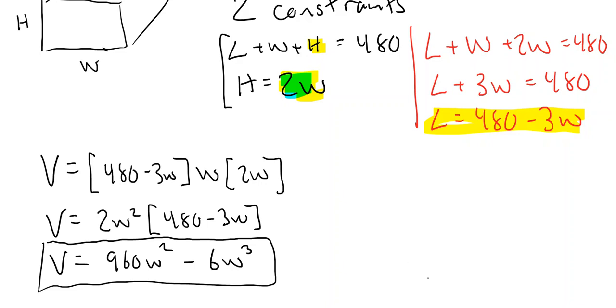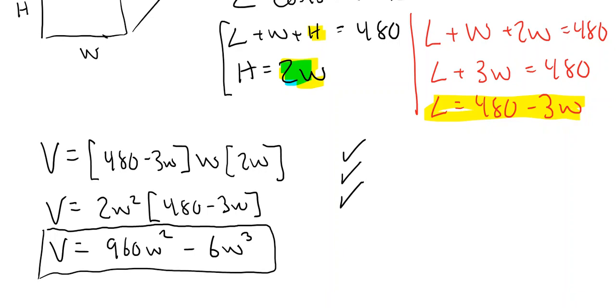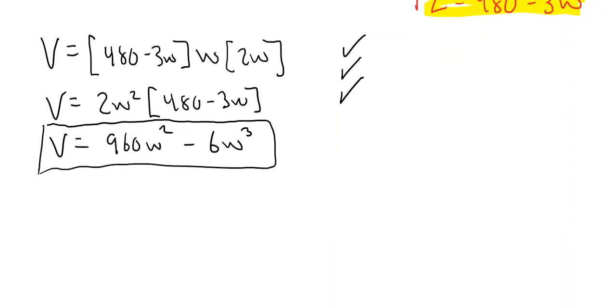All right. So we've done step one, find the objective function. We did step two, find the constraints. Step three, we substituted the constraints into the objective function. We are now ready for step four. Our favorite step, which is where we have the calculus. And so we have the volume in terms of one independent variable, W. And we want to find the derivative of that. So 2 times 960 is 1920W minus 18W squared. And of course, we're going to set that equal to zero.